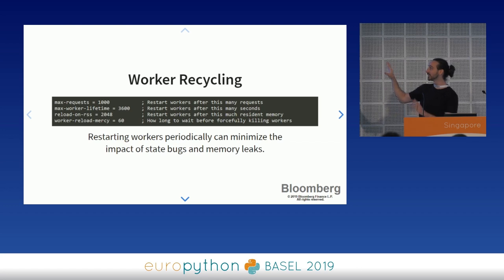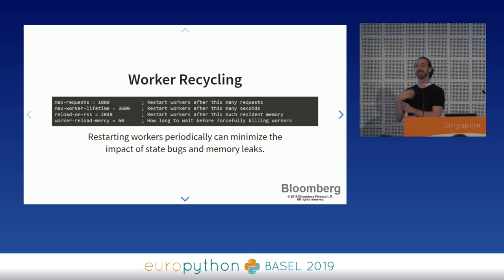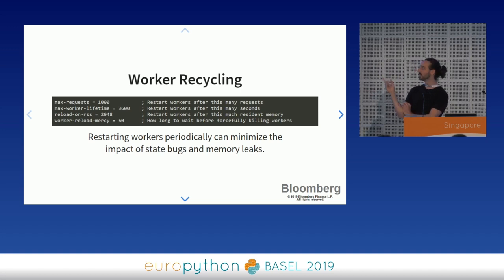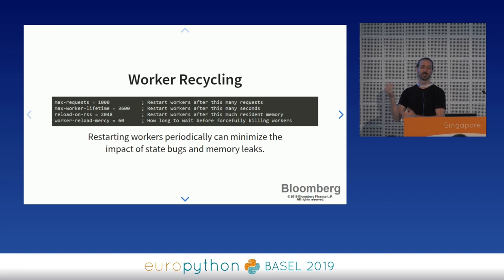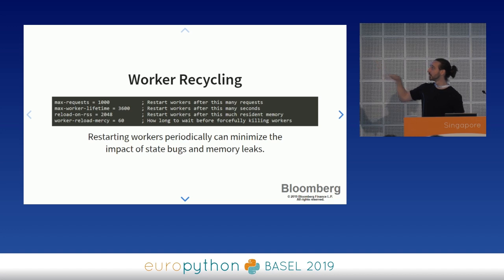This is very valuable for preventing a certain class of errors. If you have a slow memory leak and you recycle your workers, it probably won't be a problem. Obviously you should find and fix that leak anyway, but that doesn't mean you should let it cause a production problem. As far as I can tell there is really no cost to this — these workers are forked off of the parent anyway, so even startup time isn't really a big problem.